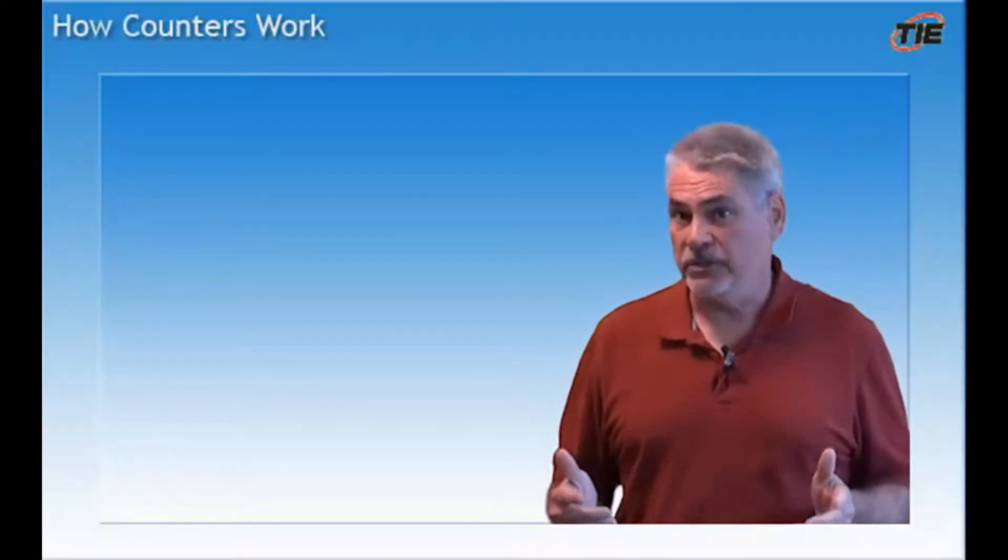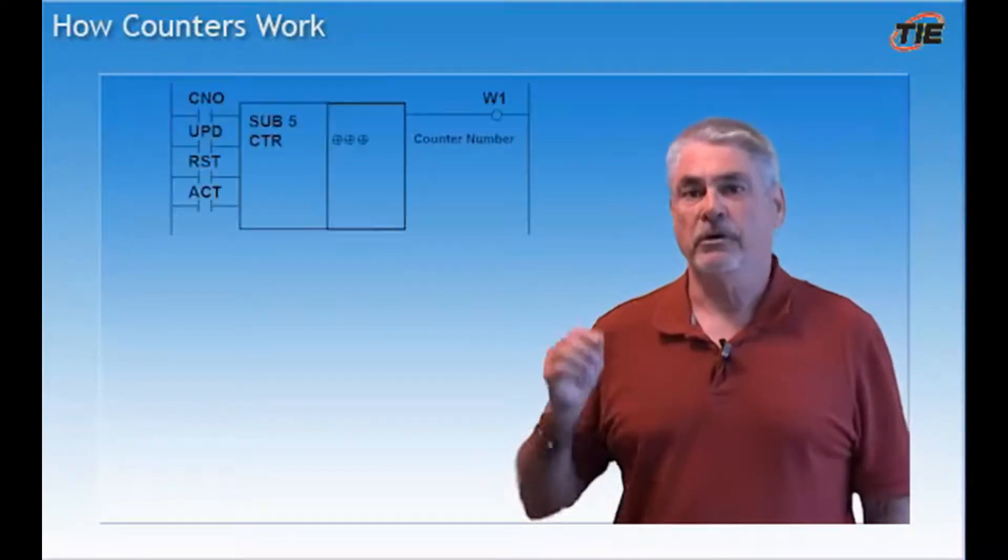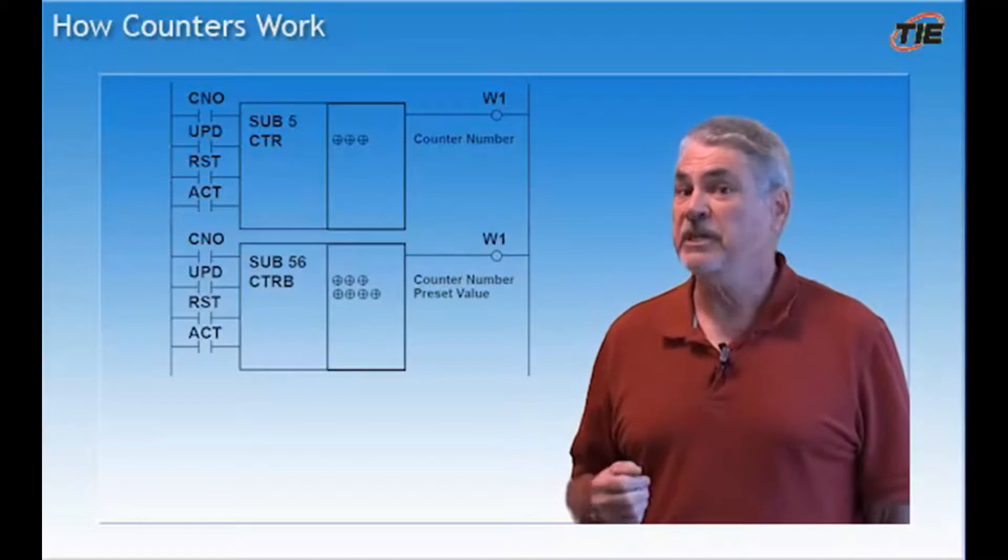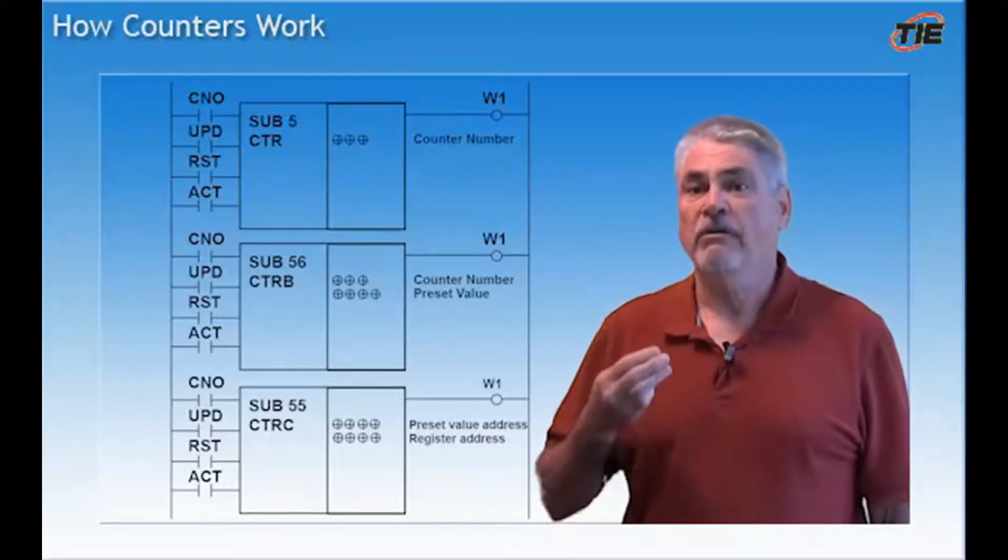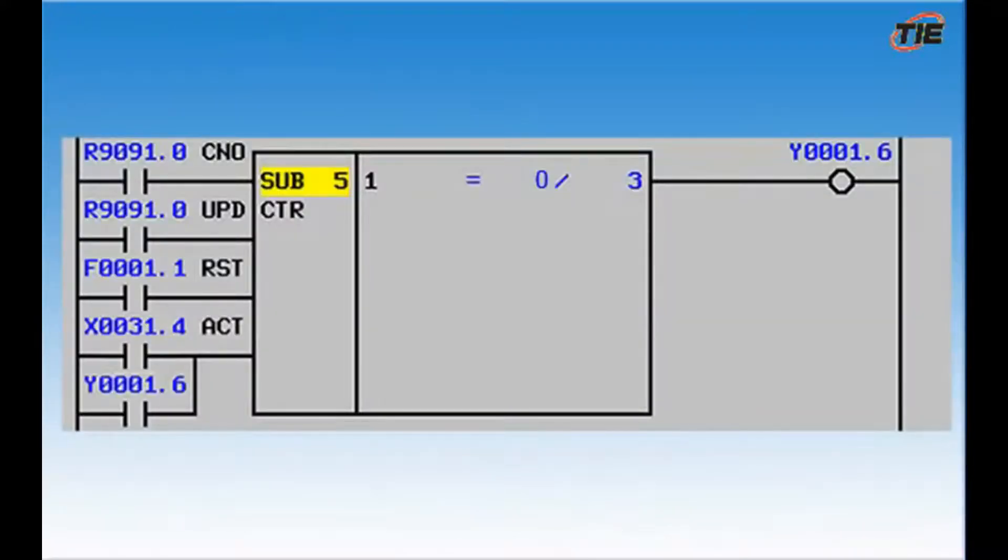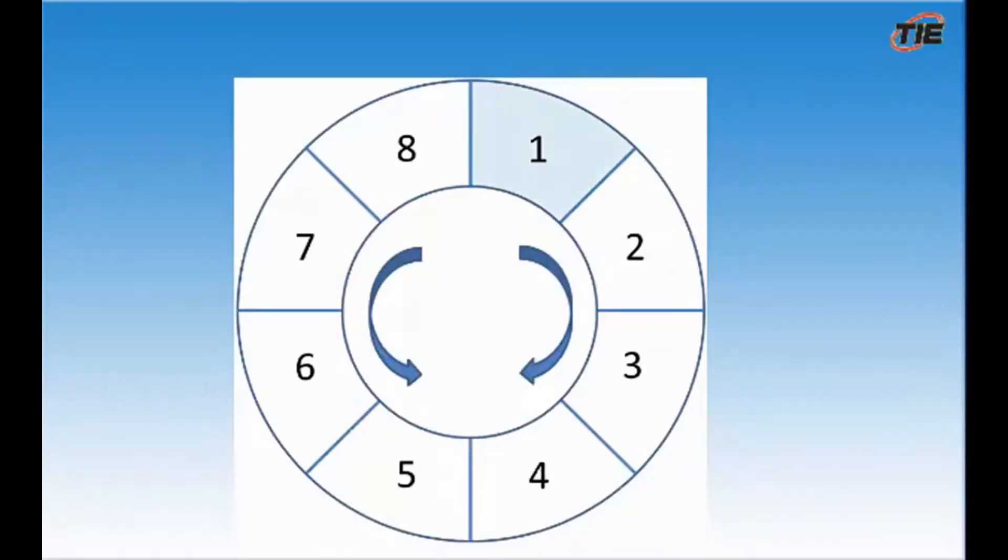Now it's time to talk about counters. We will discuss three basic counters. There are the CTR sub 5 variable counter, the CTRB sub 56 fixed counter, and the CTRC sub 55 variable counter. Counters, like the timers, are triggered by an action command. Every time that the ACT signal transitions high, it will increment the counter value by 1. Once the incremented value is equal to or greater than the preset value, the counter will turn on an output. The counters used in the FANUC ladder are known as ring counters. This means that after the preset value has been reached and the output turns on, an additional action statement will result in the counter starting over again.